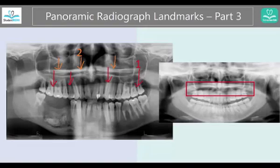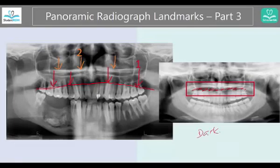Number one is indicating this line. What would that be? This is going to be the tongue. If you don't put the tongue on the roof of the mouth and form an L shape towards the tip of the palate, you will have this radiolucency — the dark area — because this is actually the airspace. That's why we ask our patient to swallow first and then put the tip of the tongue to the palate and stay there until the panoramic radiograph is done. So this is actually just the border of the tongue.